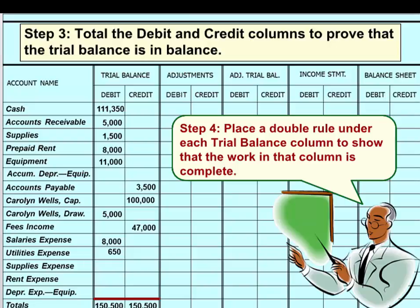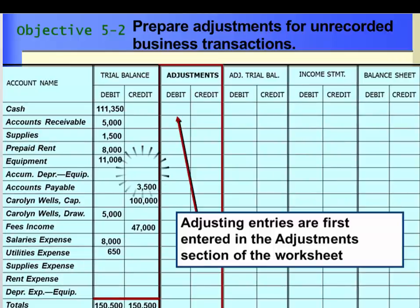After entering all of the balances from the General Ledger, we need to foot the columns in the Trial Balance section. To foot a column means to add the numbers in that column. They must balance before moving to the next set of columns. When you ensure that the debits equal the credits, you are ready to complete step four, which is to place a double rule underline under the Trial Balance columns to show that the work in the columns is complete.